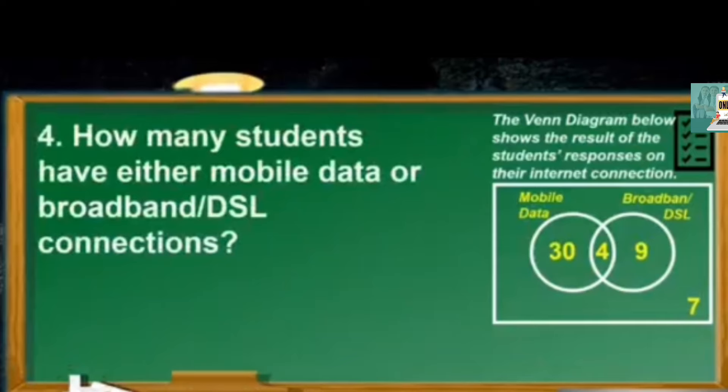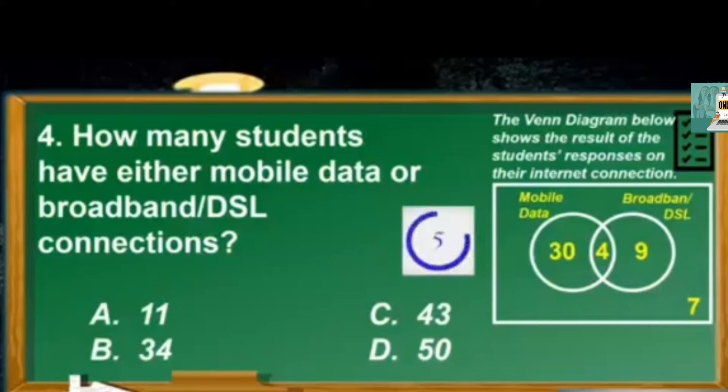Let's proceed to question number 4. How many students have either mobile data or broadband or DSL connections? A11, B34, C43, D50. The answer is C43.